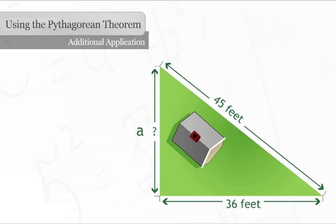First, we will plug the numbers we know into the theorem. A squared plus thirty-six squared equals forty-five squared. Thirty-six squared is one thousand two hundred ninety-six. Forty-five squared is two thousand twenty-five.